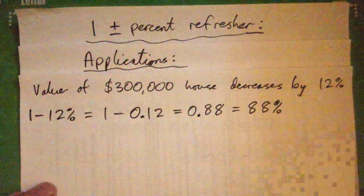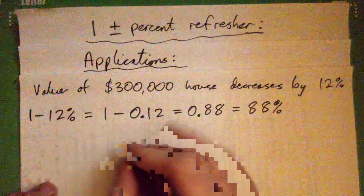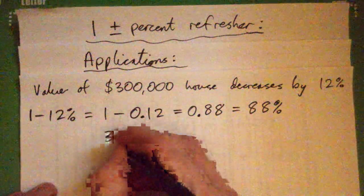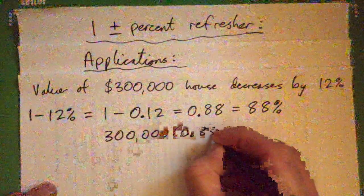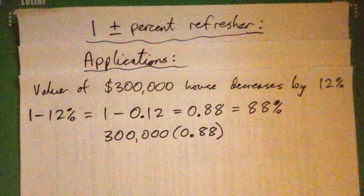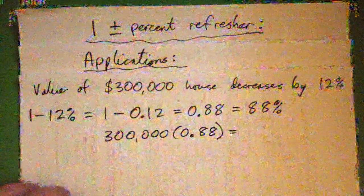88%. So, in fact, what we're... I'm going to write this down. In other words, we just take our 300,000. We multiply it by 0.88. That's 88%. And that will just give us our answer directly, won't it? Right?